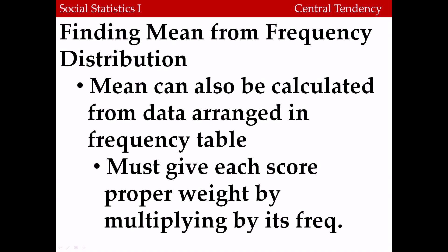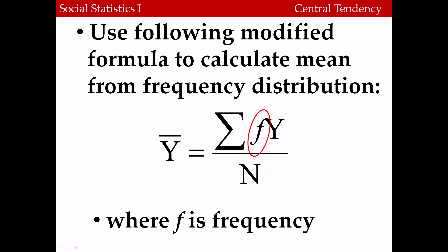We can also find the mean from a frequency distribution, which is very handy if we have a large sample size. We wouldn't want to calculate these things by hand because it would be very time consuming. Using a frequency distribution to calculate the mean can be a big time saver. We take each score, weight it by its frequency, and then divide by the total number of cases. In the numerator we have the sum of the values of y multiplied by f, where f is the frequency corresponding to each of the cases, and in the denominator we again have n, the total number of cases.